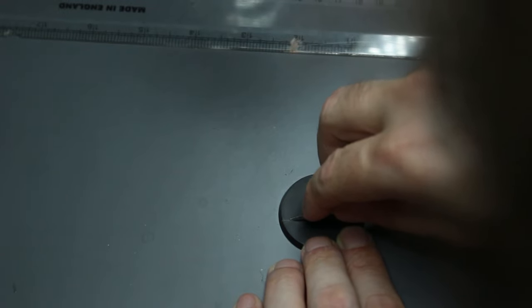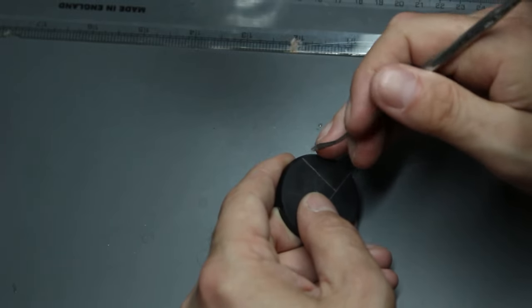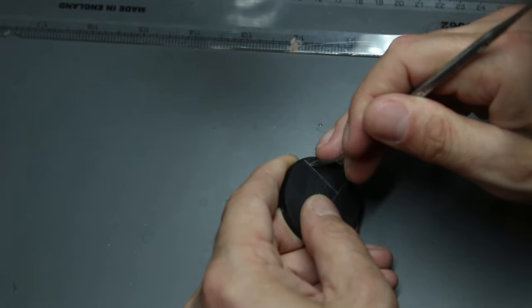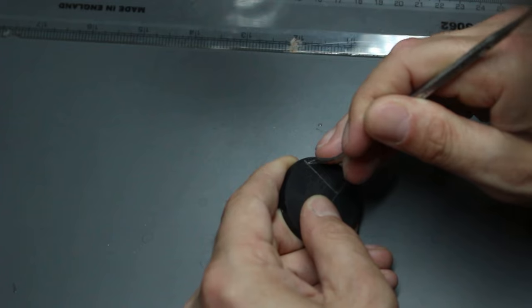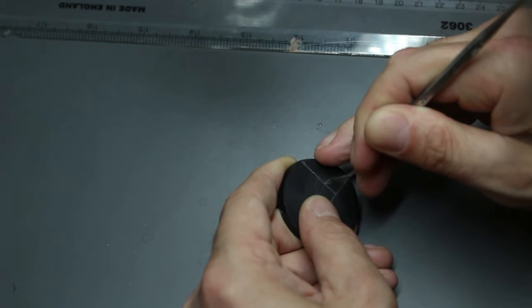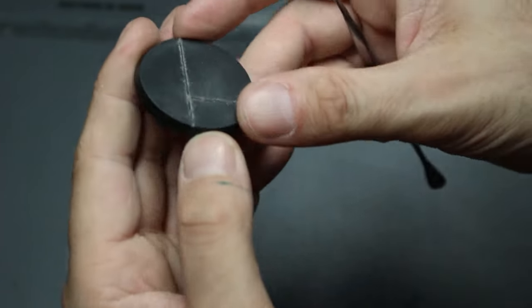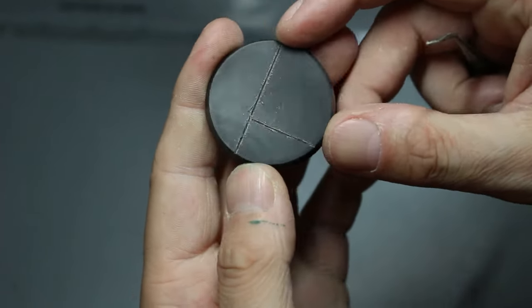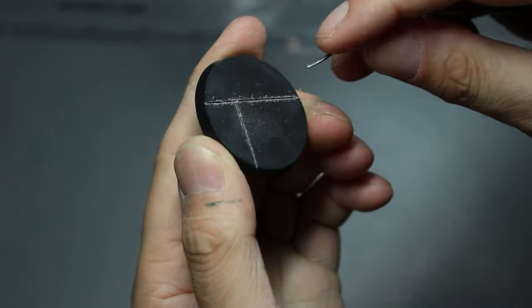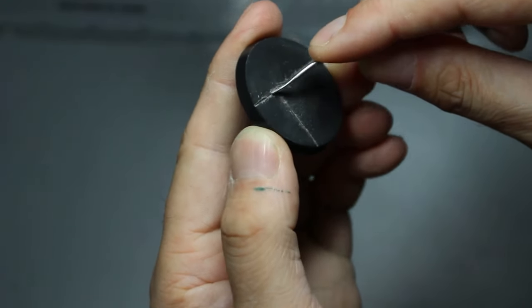So we just run the sculpting tools straight down the lines, using the knife marks as a guide, and we'll just deepen those so they match the slightly deeper grooves you get on Games Workshop bases.